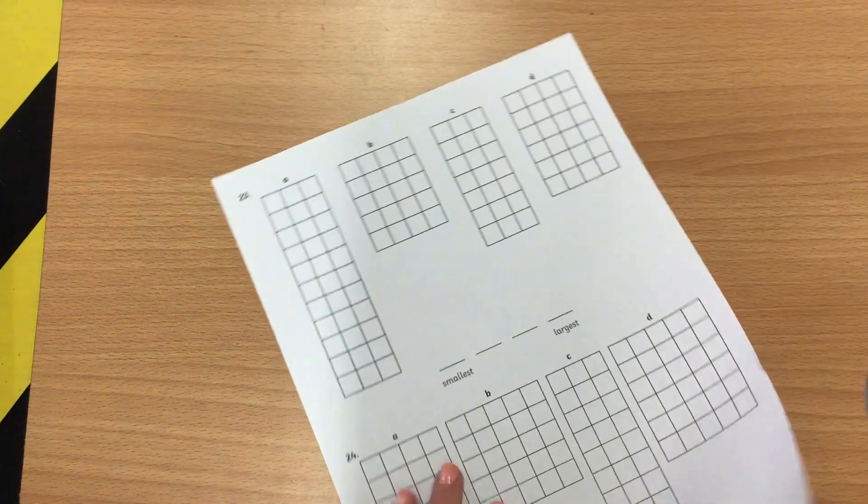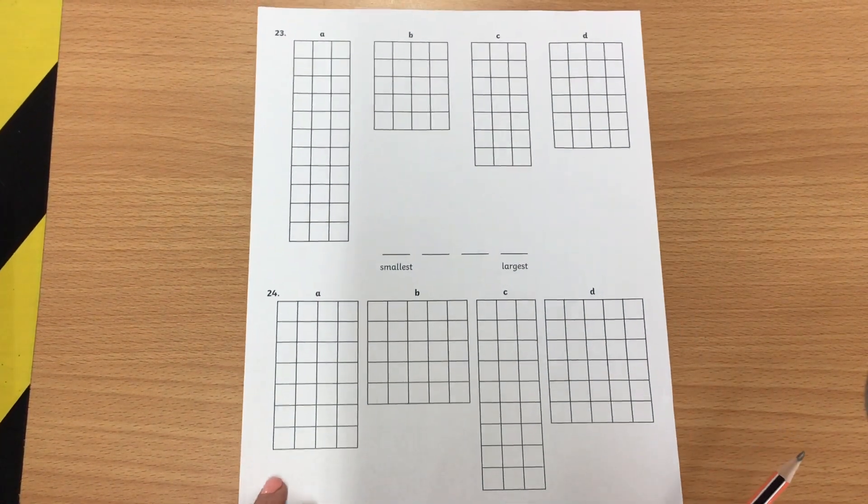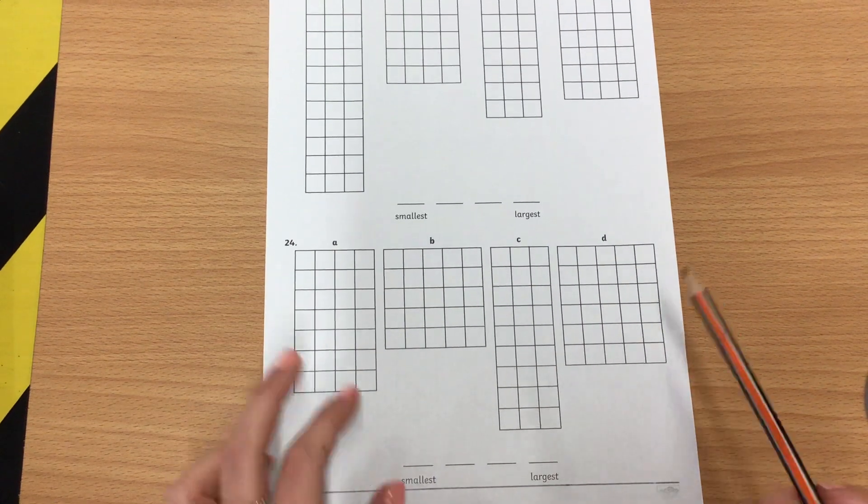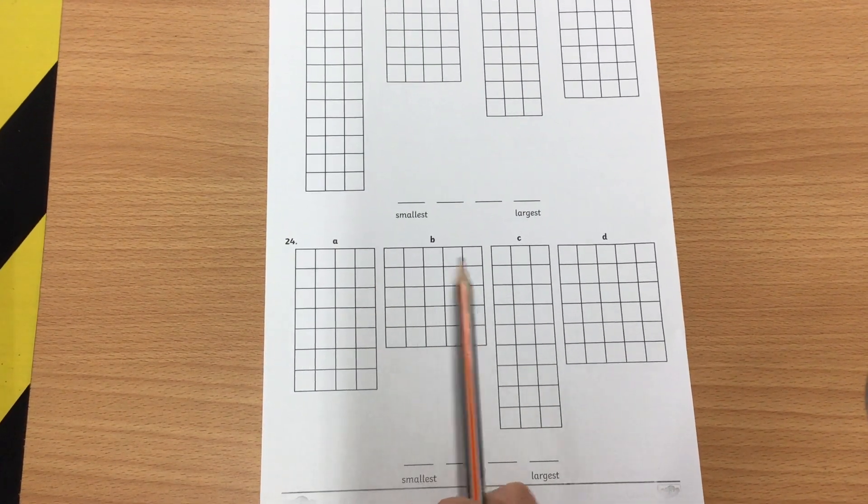Remember this sheet is also double sided so you're going to need to do the same on these ones. These shapes are getting quite big now so I'm thinking it might be quite tricky for me to count them all.